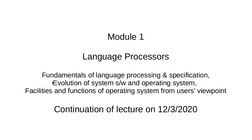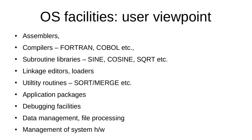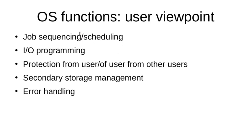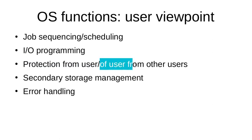With this, we come to the end of the evolution of system software and OS. The last part is facilities and functions of OS from the user's viewpoint. As an end user, every person has specific expectations from the operating system. In terms of functions, we expect every OS to perform job sequencing and scheduling — how, when, and in what order jobs will be performed. The OS must also enable input/output operations, provide protection of the user from other users, and ensure that no user's work is compromised by another. These security functions are essential for any operating system.